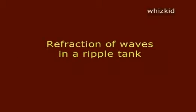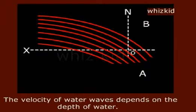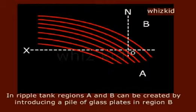Refraction of Waves in a Ripple Tank: The velocity of water waves depends on the depth of water. In the ripple tank, regions A and B can be created by introducing a pile of glass plates in region B.